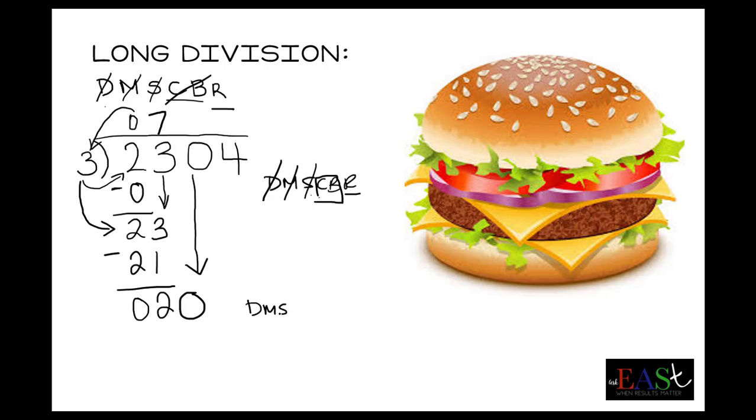So write down: Does McDonald's sell cheeseburgers raw? And do it again. Divide. 3 into 20 goes how many times? Well, 6. 6 times 3—see, because you've done your divide, now you multiply. 6 times 3 gives us 18.